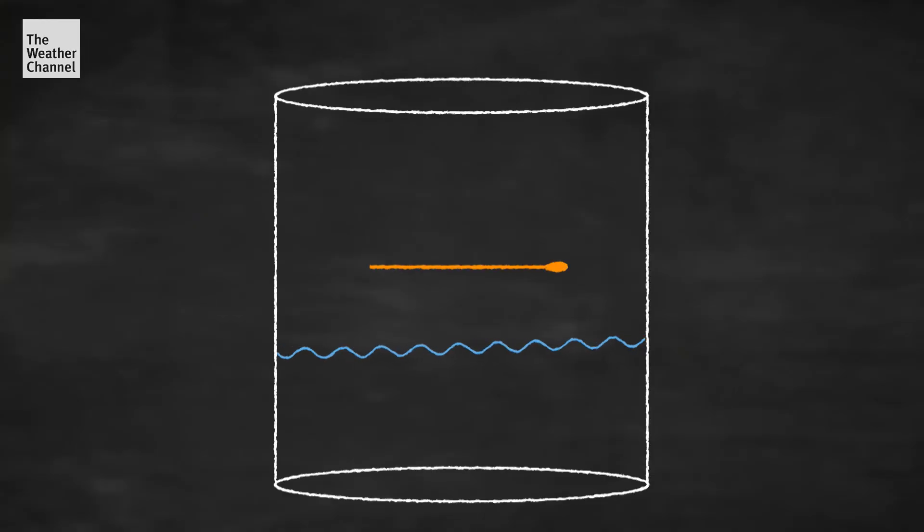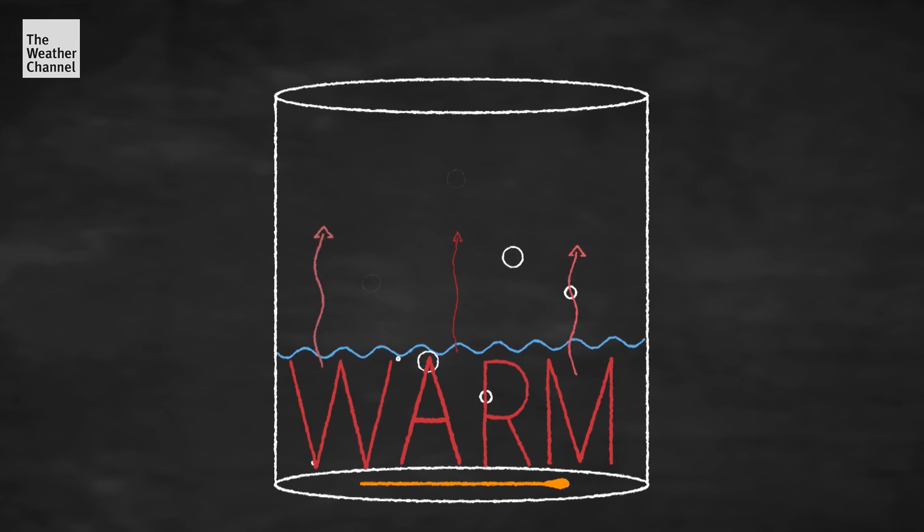Now, when you put the match in the jar, the smoke produces tiny condensation nuclei. Also, the jar's temperature profile is like a typical atmosphere, warm at the bottom, thanks to the hot water we left in it, and cold at the top, compliments of the ice.